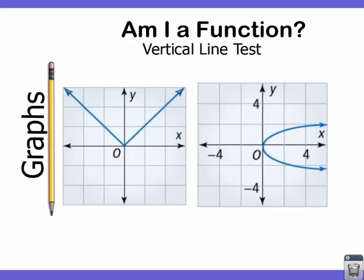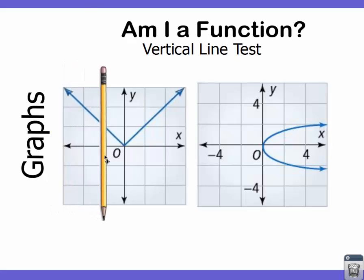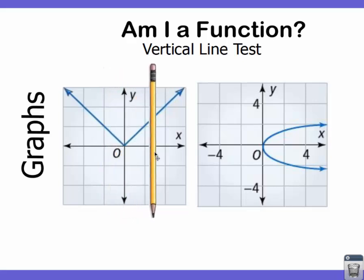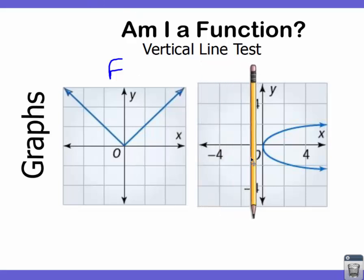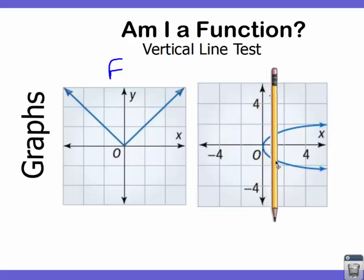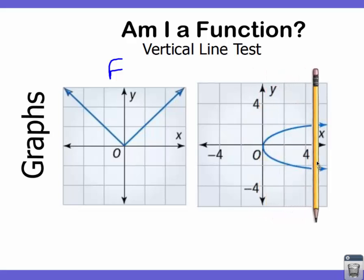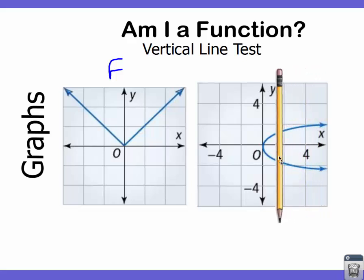For the remaining two graphs: the first one — as the vertical line moves across, it only hits that line in one spot, so it is a function. The second graph, as you draw the vertical line across, hits multiple points along one x value, so this is not a function.